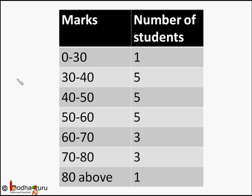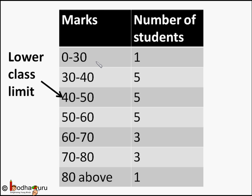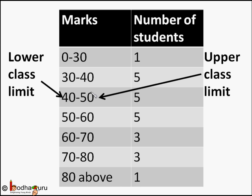These groupings are called classes or class intervals, and their size is called the class size or the class width — like 10 for the class 30 to 40. In each of these classes, the lesser number is called the lower class limit and the greater number is called the upper class limit. For example, in the 40 to 50 class interval, 40 is the lower class limit and 50 is the upper class limit.